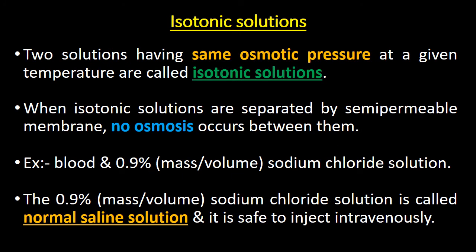Let us know about isotonic solutions. Isotonic solutions are solutions which have the same osmotic pressure at a given temperature. When isotonic solutions are separated by a semipermeable membrane, no osmosis takes place between them. For example, blood and 0.9% sodium chloride solution are isotonic — there is no osmosis between them. This 0.9% sodium chloride solution is called normal saline solution, which is safe to inject intravenously.